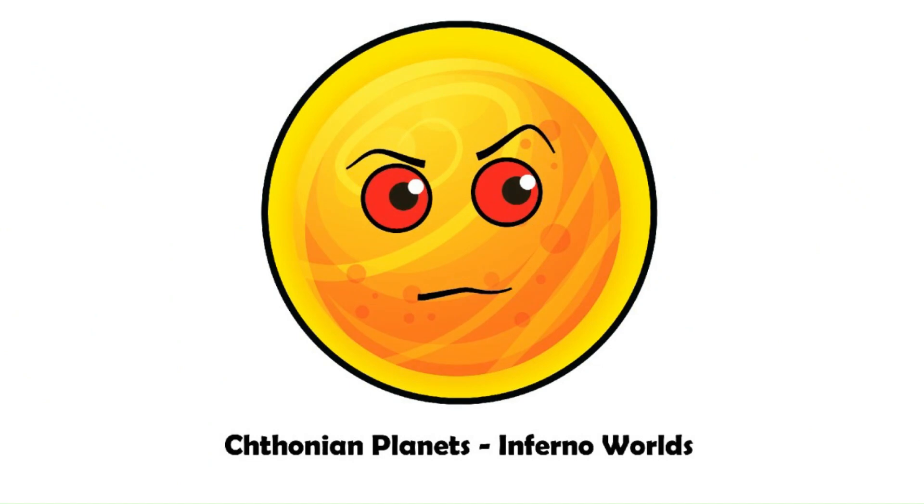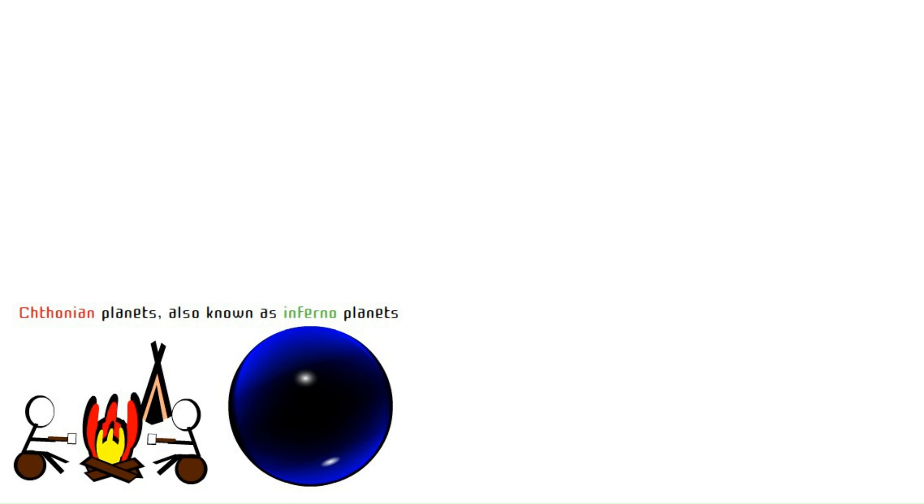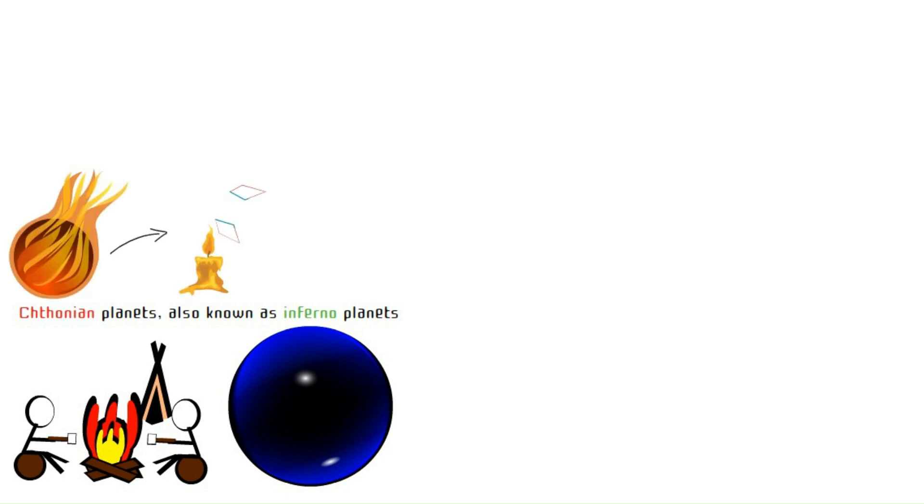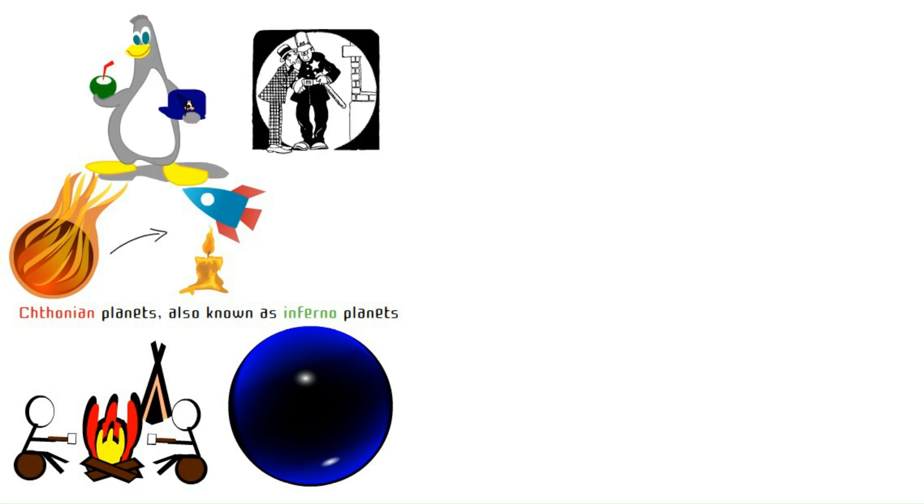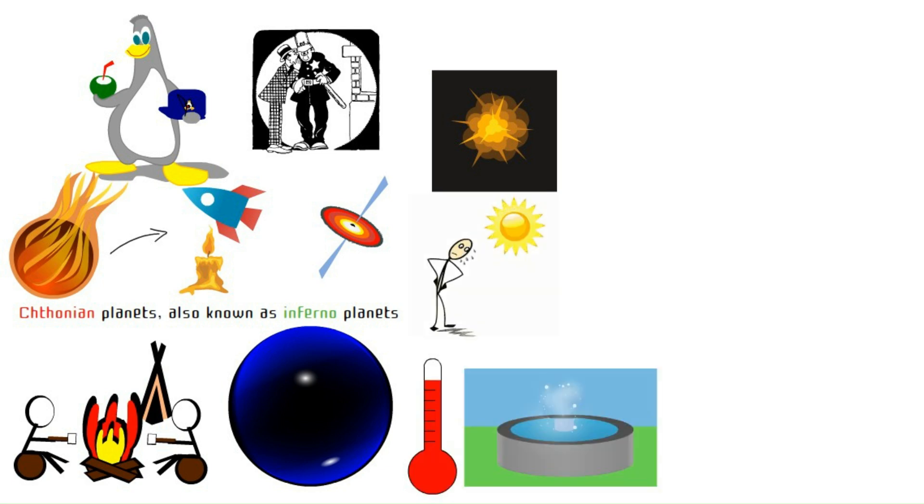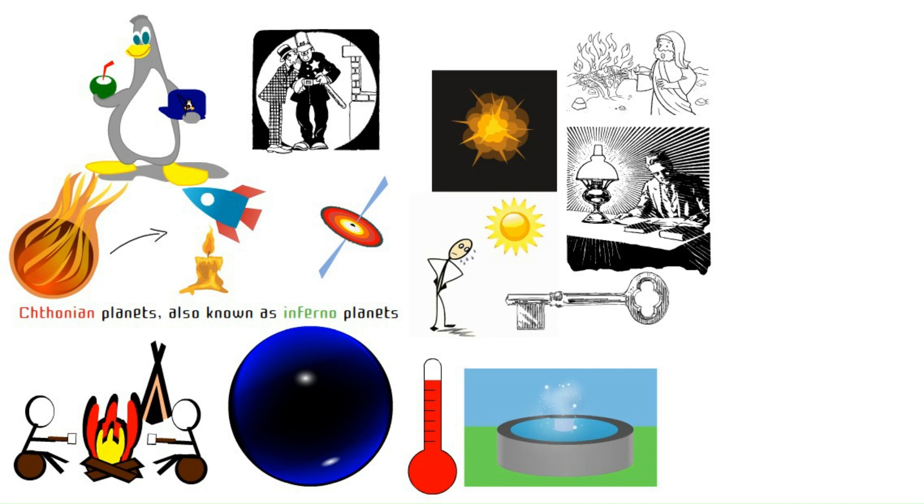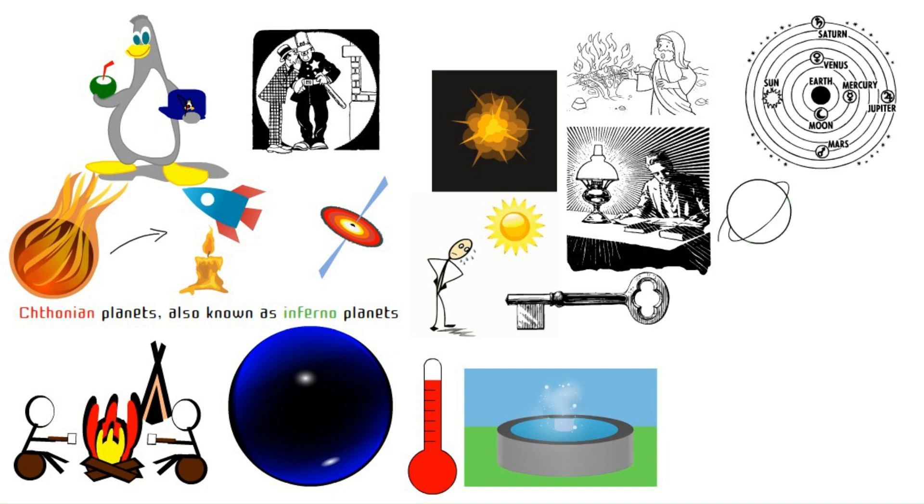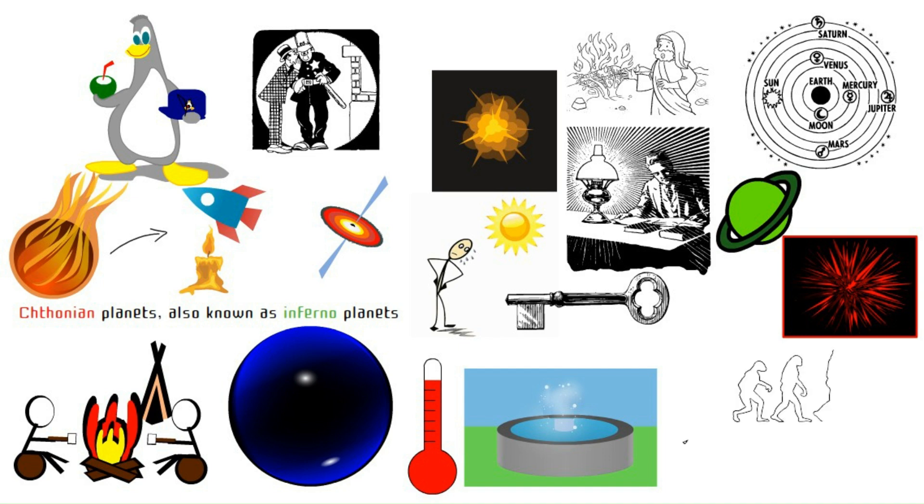Thonian planets. Inferno worlds. And here's another for the heat lovers. Thonian planets, also known as inferno planets, are basically giant balls of iron. Imagine a world so scorching it'd melt your spaceship on landing. Not exactly a vacation spot. These fiery planets are rumored to be the leftover cores of smashed-up celestial bodies, their iron hearts laid bare to space. The heat on these inferno worlds is so intense, it would vaporize any atmosphere that dared to form. But even these fiery friends have a story to tell. Studying their makeup could unlock secrets about the solar system's wild past, like how planets form cores, and how cosmic crashes shape planetary evolution.